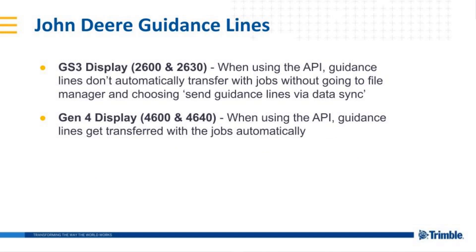Data that gets sent from a GS3 display — a 2600 or 2630 — via the John Deere API will not automatically include guidance lines. To get guidance lines with job data, you'll need to go to the File Manager screen on your display and choose to send guidance lines via data sync. If using the Gen4 displays, the 4600 or 4640, lines will transfer over with jobs and get passed on to TrimbleX software via the API one time at the end of each day.